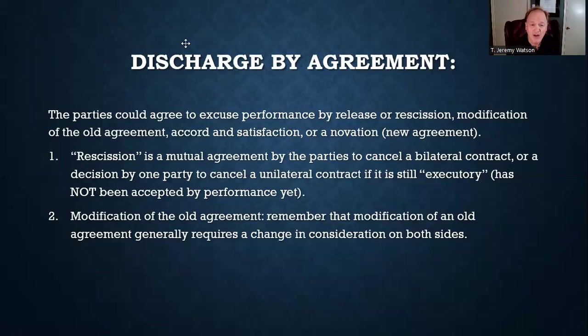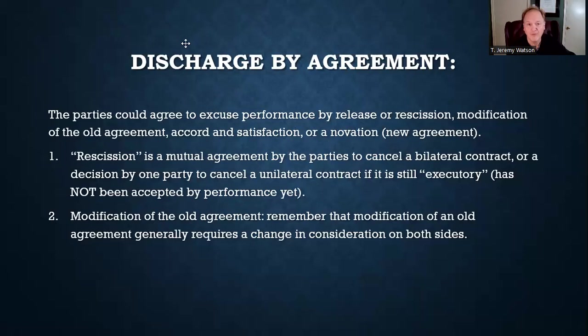Similar to rescission is modification. Modification is a change in a contract by mutual agreement. Rescission is tearing up the contract; modification is changing it. Both sides can modify a contract — for example, if I was going to paint your house red for $500 but we agree I'll paint it blue for $500, my performance to paint it red has been excused and substituted with painting it blue. Or we might scale it back: instead of the whole house, I just paint your back shed.